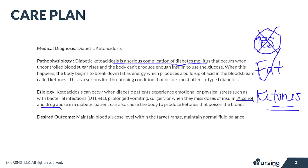The desired outcome for a patient in DKA is number one, to maintain blood glucose level within the target range, and number two, to maintain normal fluid balance.